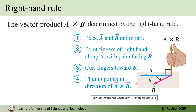In doing so, we will need to use the cross product of vectors, so let's review that first. If A and B are two vectors, their cross product A cross B is determined by the right-hand rule, which says that if you close your fingers in the direction you move them from A to B, then the thumb shows the direction of the cross product A cross B.